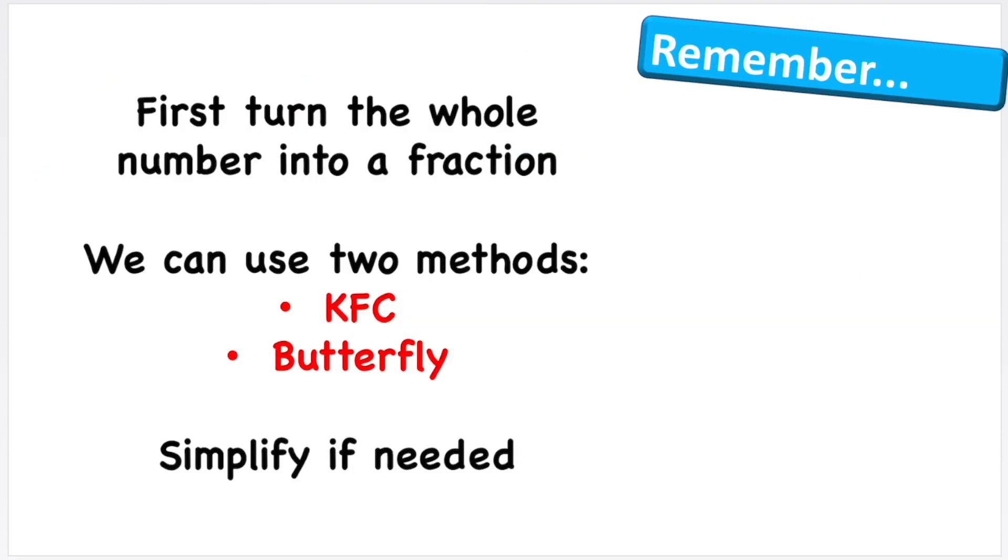And there we go. That is everything you need to know about dividing a fraction by a whole number. Things to remember: First, turn the whole number into a fraction. Then we can use one of two methods—the KFC or the butterfly method. And then we're going to simplify or convert our fraction back to a whole number if necessary.